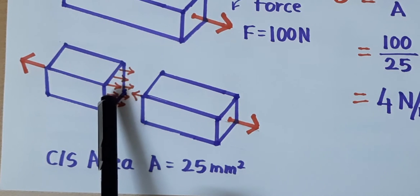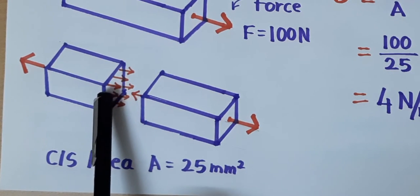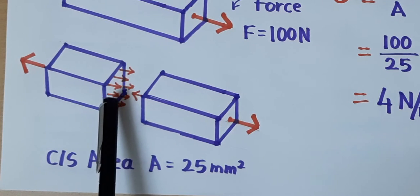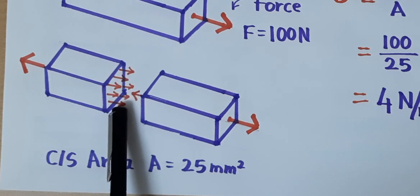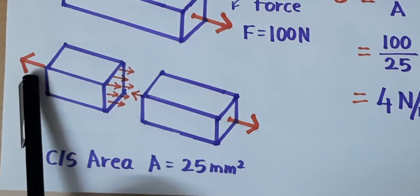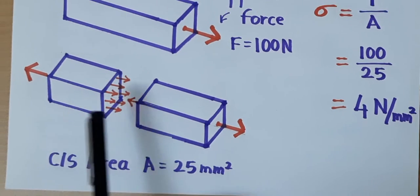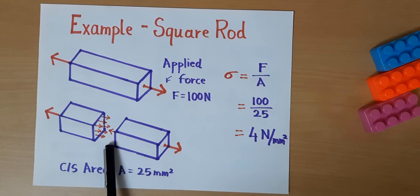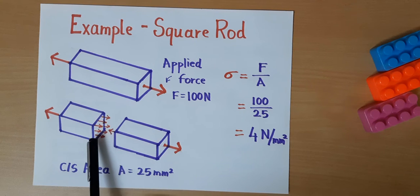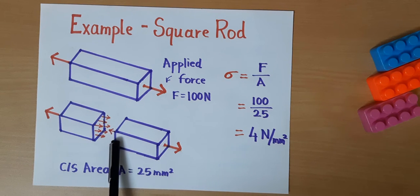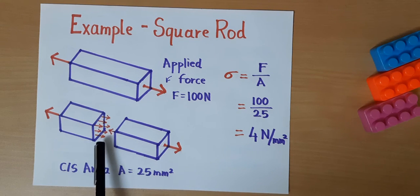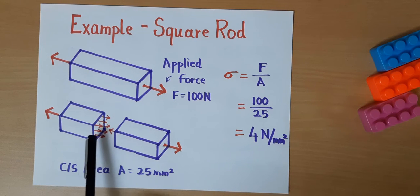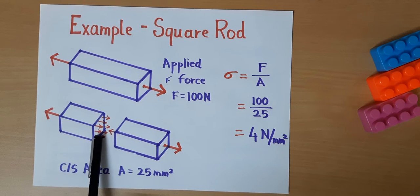This internal force is perpendicular to the cross section area. Summation of all internal forces equals the applied external load. For representation, we can show it by multiple arrows or a single arrow. This is called a normal force, because it is perpendicular to the cross section area. This stress is a surface phenomenon.